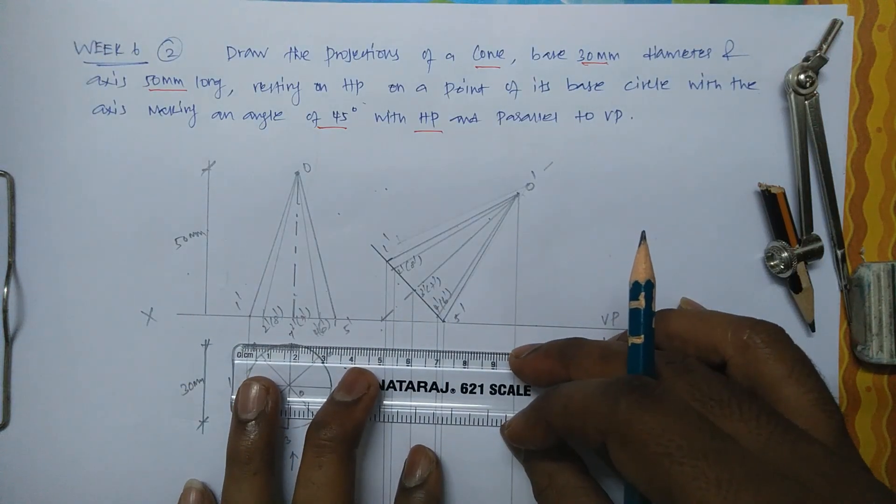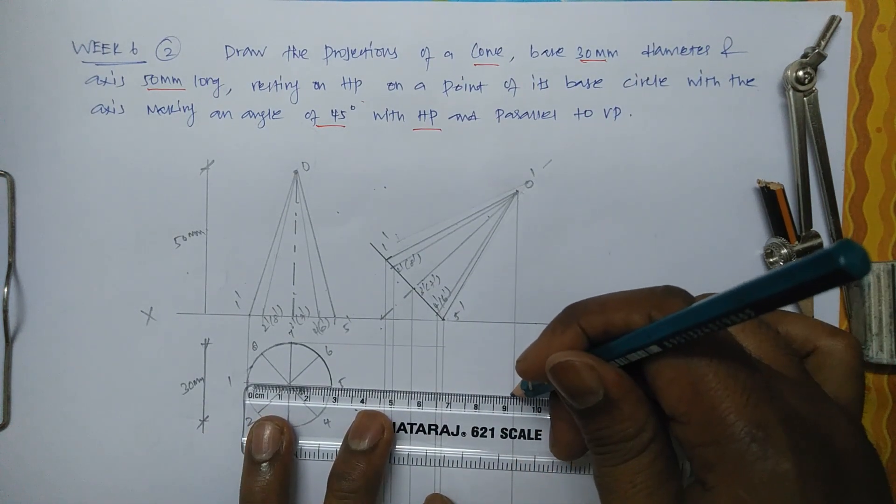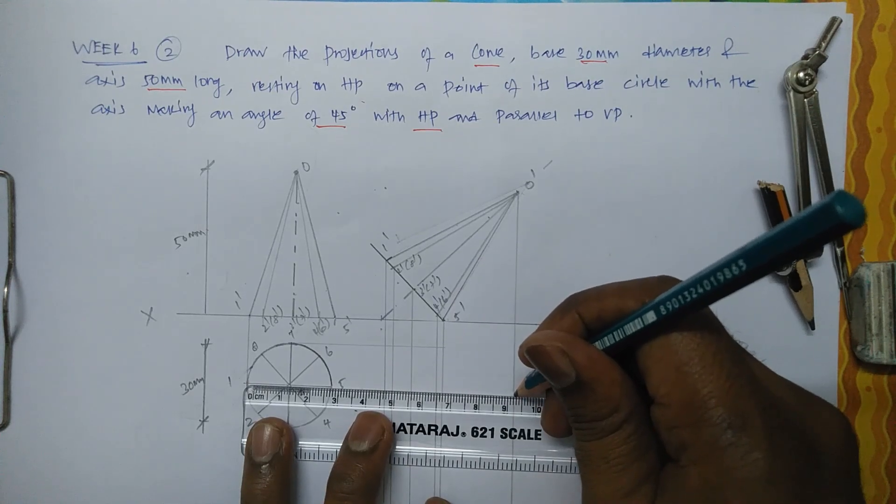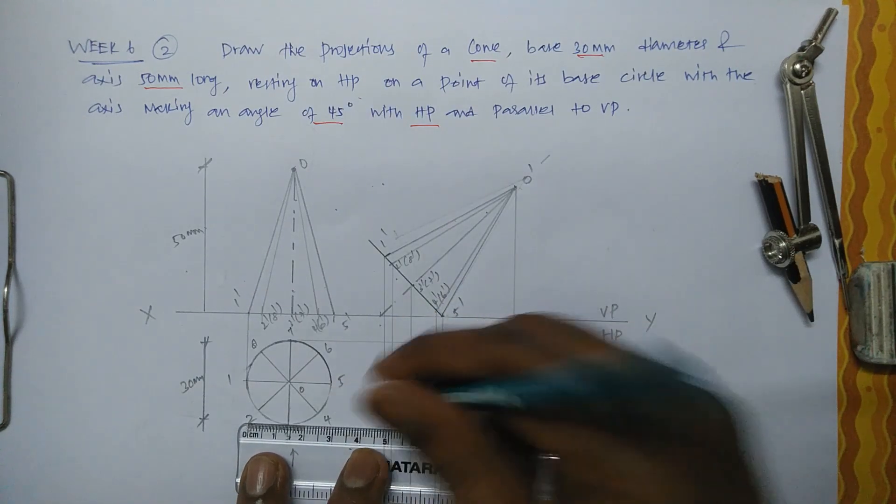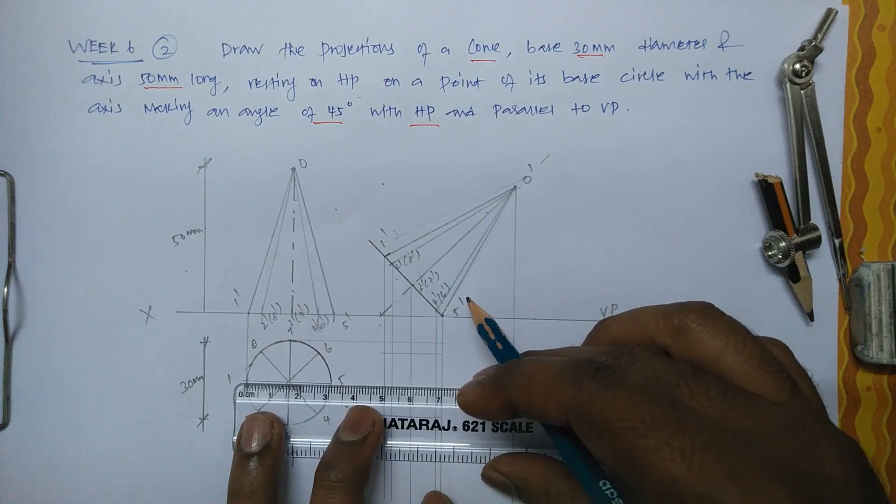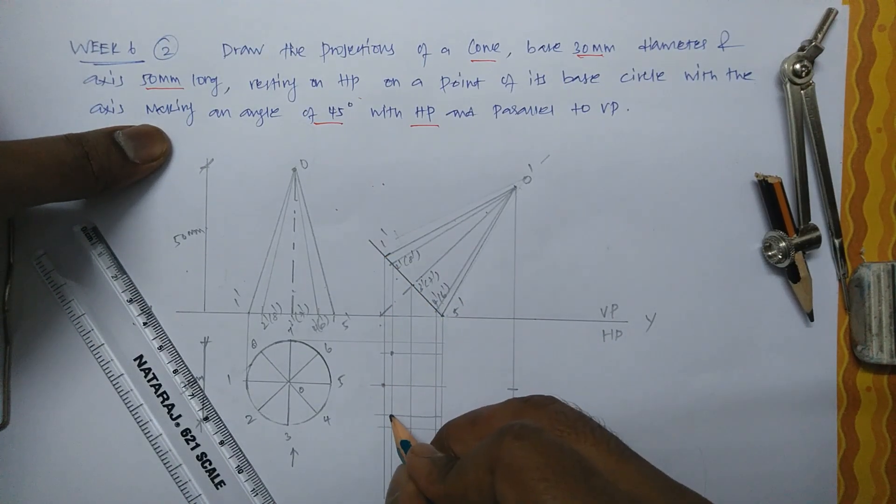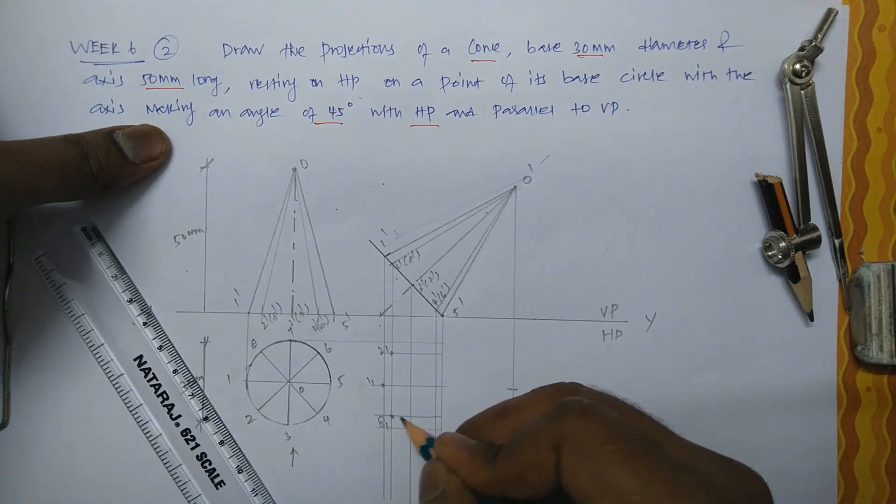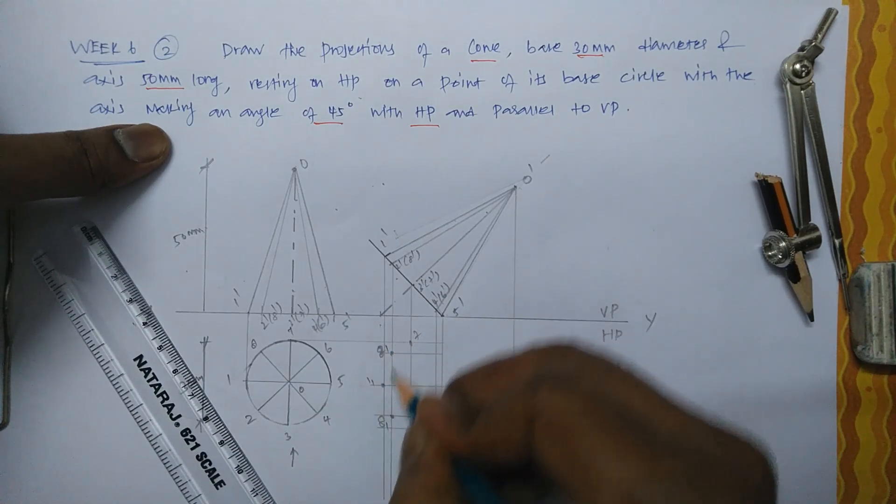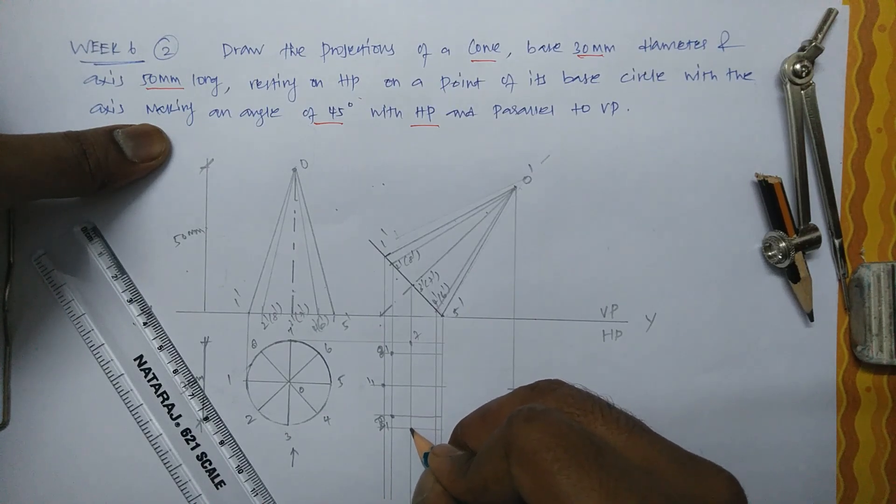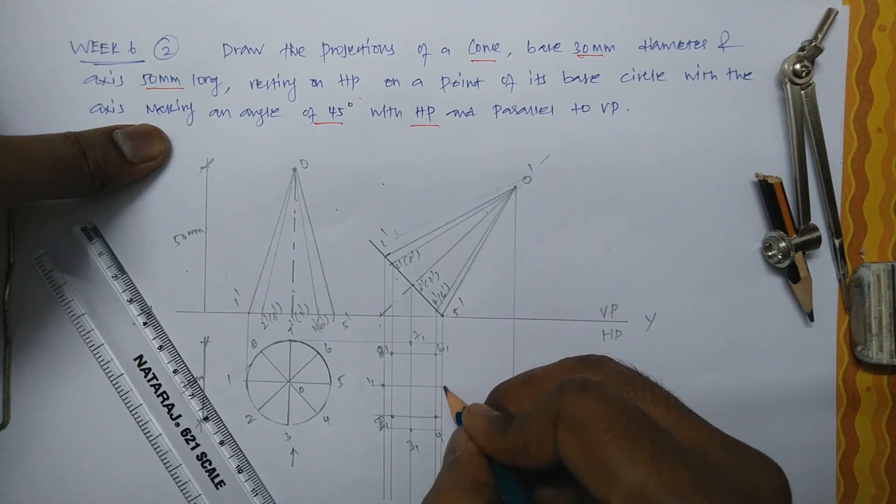So erect horizontal lines. See, if you require only one point, you don't need to make more lines. Now look at the points. This is 1, let it be 1. This is 2 and 8. This one is 8, this one is 2. This one is 3, this one is 7, this one is 6, this one is 4, this one is 5, this one is O.